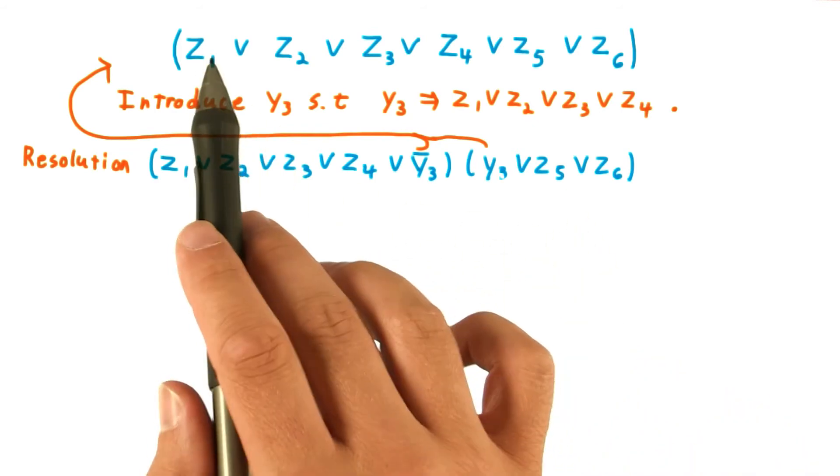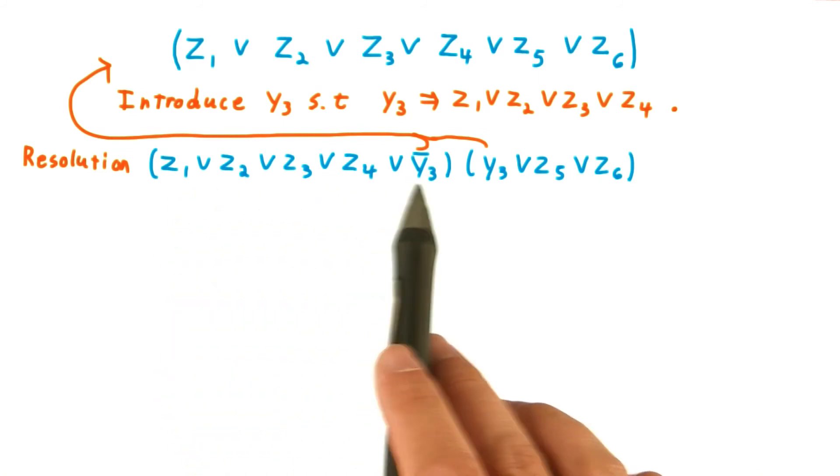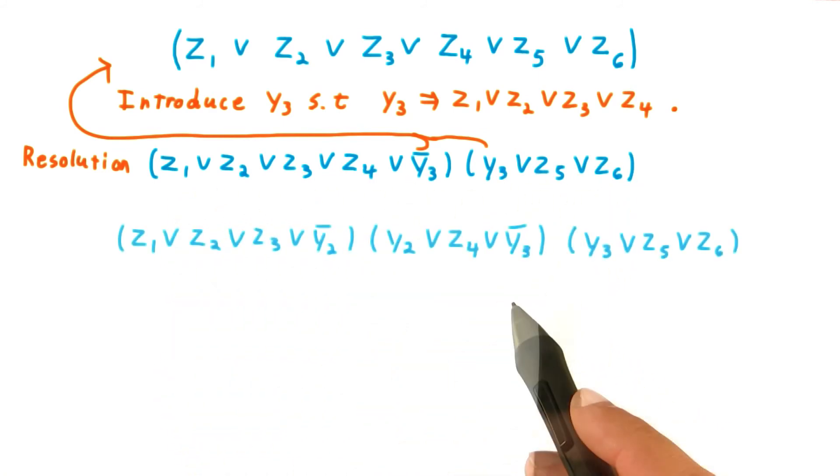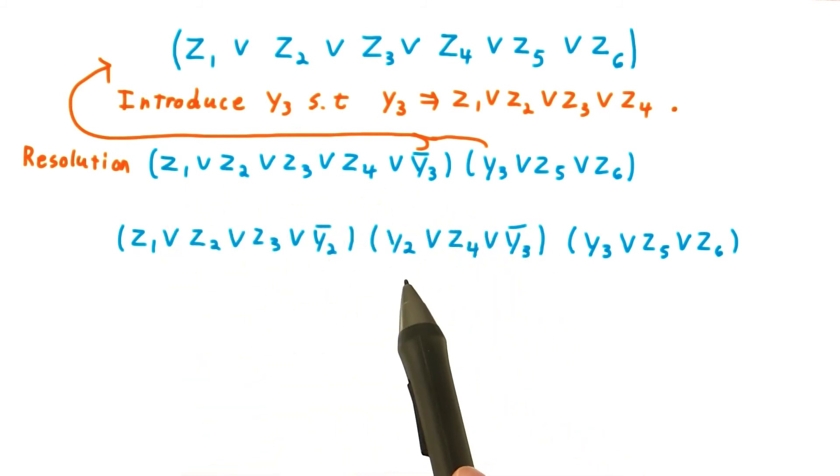Note that we went from having a longest clause length of 6, to having one of length 5, and another of length 3. We can apply this strategy again, to the clause that's too long, by introducing another variable, Y2,